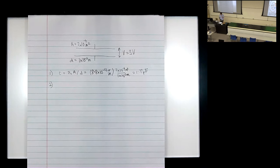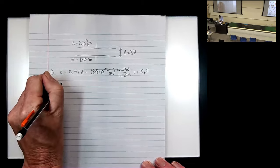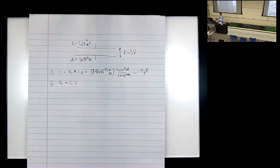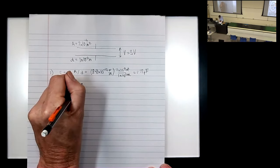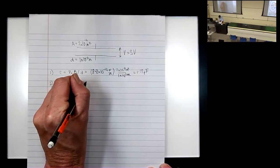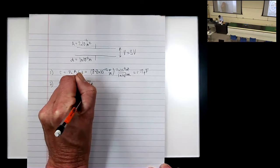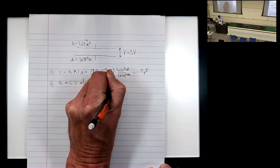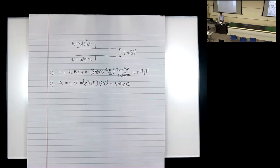Second, find the charge on the plates. Using the master equation C = Q/V, rearranged as Q = CV: Q = 1.77 picofarads × 3 volts = 5.31 picocoulombs. So there are about 5 × 10⁻¹² coulombs of charge on the capacitor.